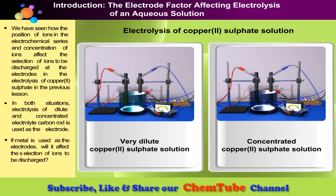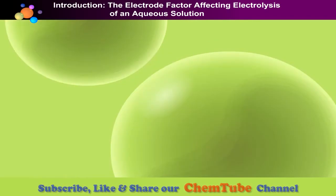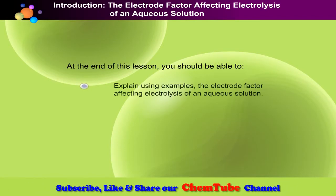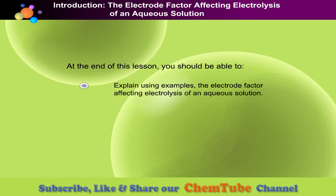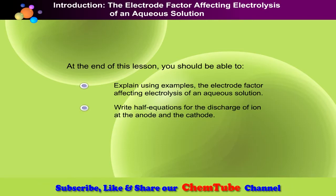But what if metal is used instead — will it affect the selection of ions to be discharged? At the end of this lesson, you should be able to explain using examples the electrode factor affecting electrolysis of an aqueous solution, and write half equations for the discharge of ions at the anode and the cathode.